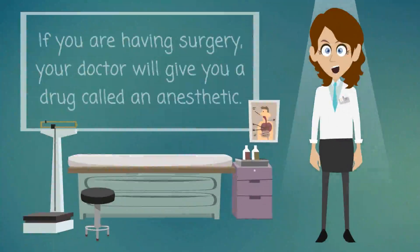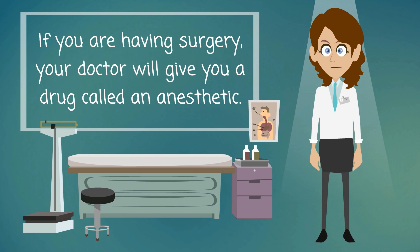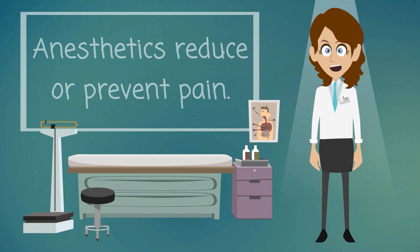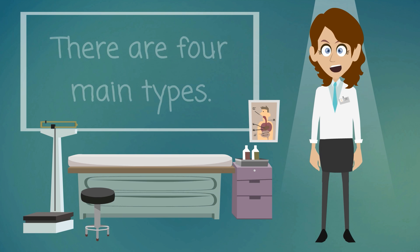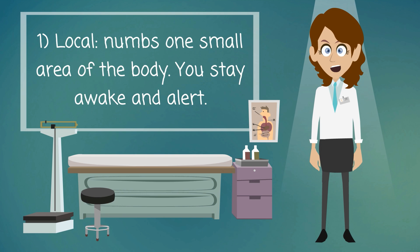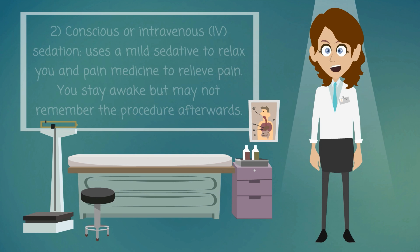If you are having surgery, your doctor will give you a drug called an anesthetic. Anesthetics reduce or prevent pain. There are four main types. Local anesthesia numbs one small area of the body; you stay awake and alert.